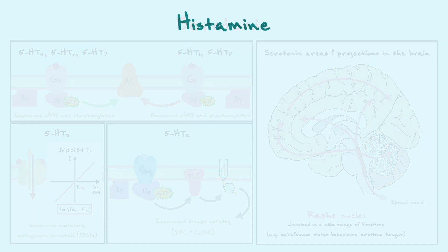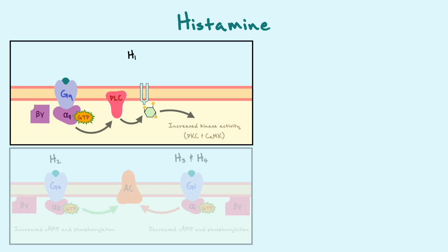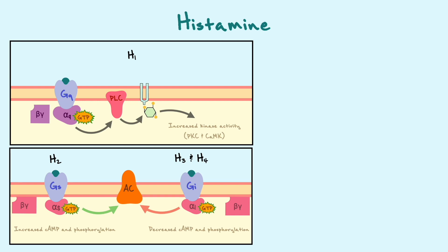Finally, when it comes to histamine, all of its known receptors are metabotropic. There are four main families and just like in the case of serotonin, these metabotropic receptors carry out the Gi, Gs, and Gq pathways. Receptor H1 mediates Gq, H2 mediates Gs, and H3 and H4 mediate Gi.